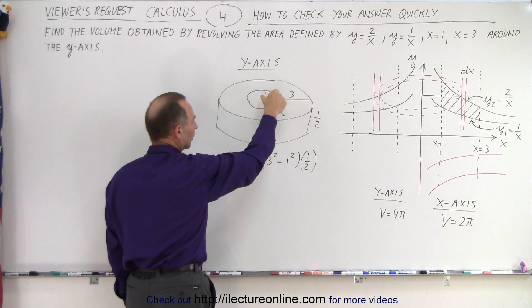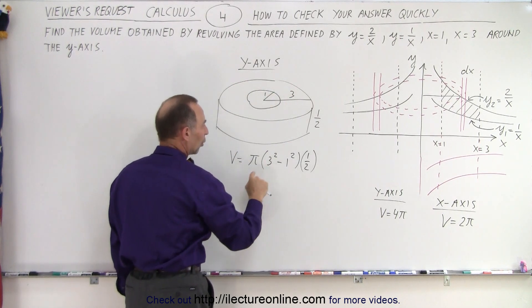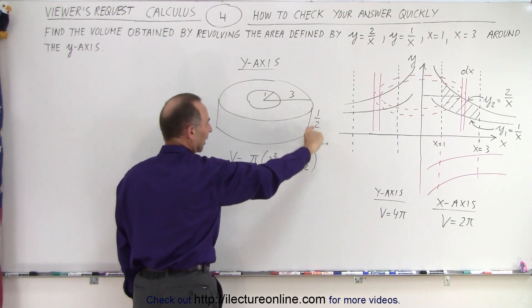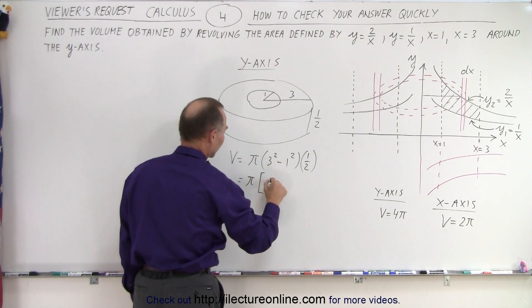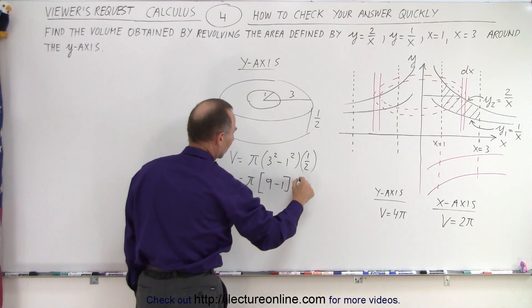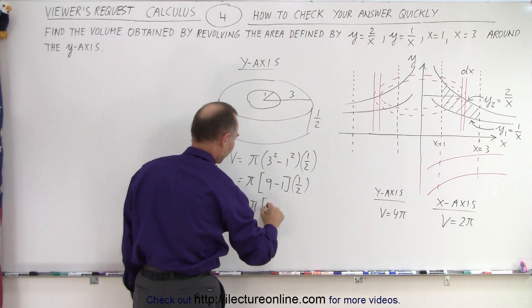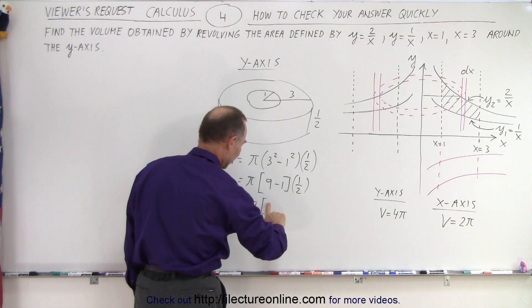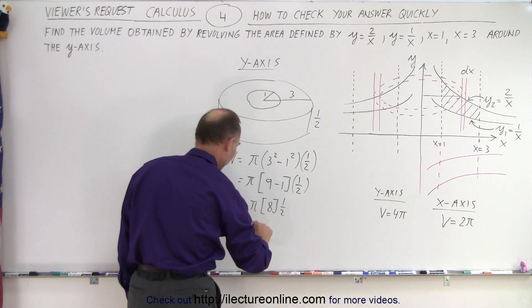So you take the outer radius, the inner radius, subtract the two to get this portion. You then get rid of the hole and multiply it times the height, which is 1/2. So this would be equal to π, times 9 minus 1, times 1/2. So this would be π times 4, not 4, I'm getting ahead of myself. That would be 8, times 1/2. So that would be equal to 4π.